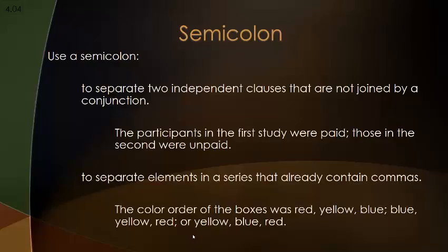The other main use of a semicolon is separating elements in a series that already contain a comma within them. For example: 'The color order of the boxes was red, yellow, blue; blue, yellow, red; yellow, blue, red.' The semicolons tell the reader that the boxes were in three separate orders and indicate what those orders were each time. So you can see how the semicolon is used to separate lists that already have commas within them.